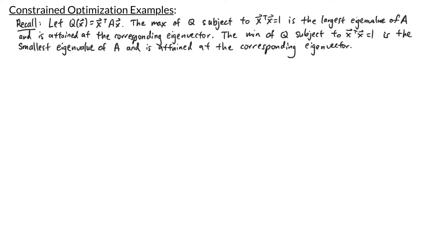In this video, we'll look at some constrained optimization examples. In our previous video, we learned the following: if q is the quadratic form given by x transpose times A times x, then the maximum of q subject to x transpose times x equals 1 is the largest eigenvalue of A, and is attained at the corresponding eigenvector. The minimum of q subject to x transpose times x equals 1 is the smallest eigenvalue of A, and is attained at the corresponding eigenvector.